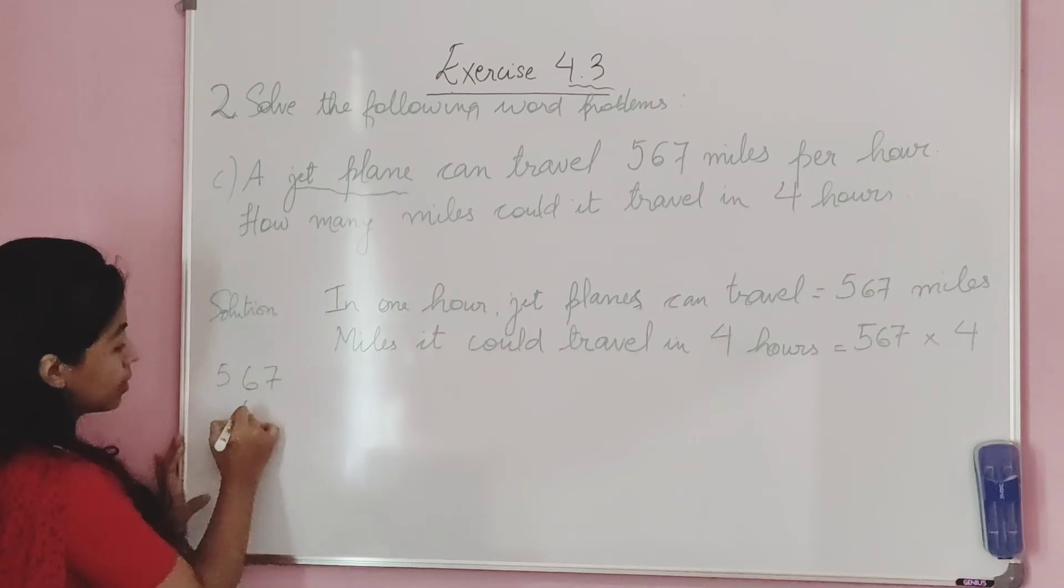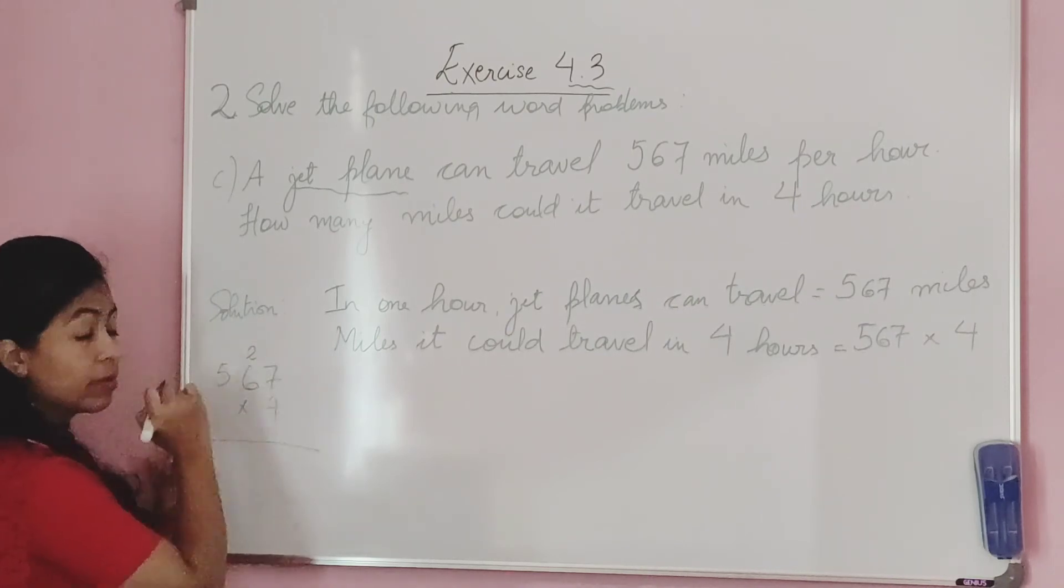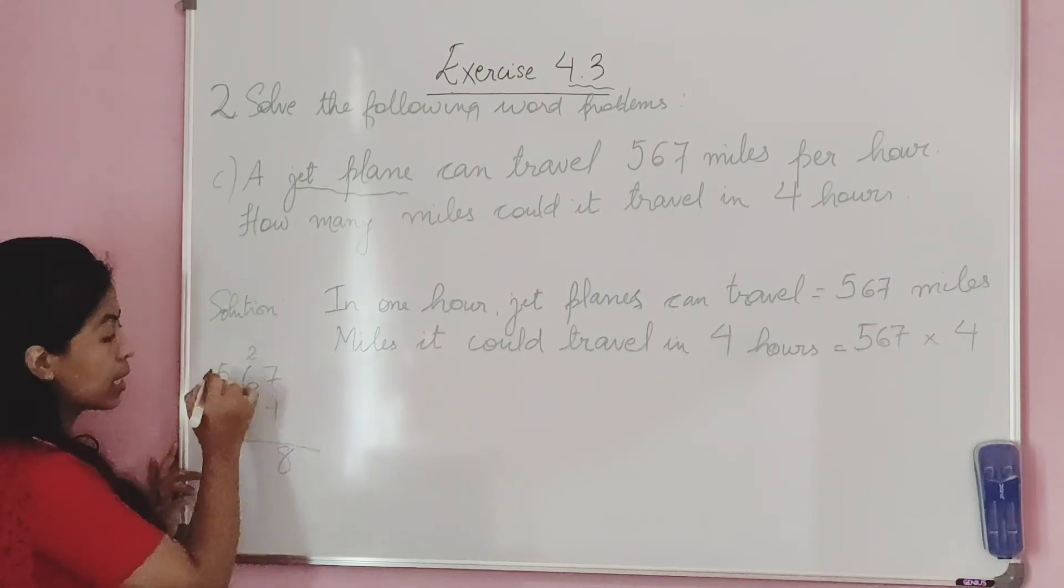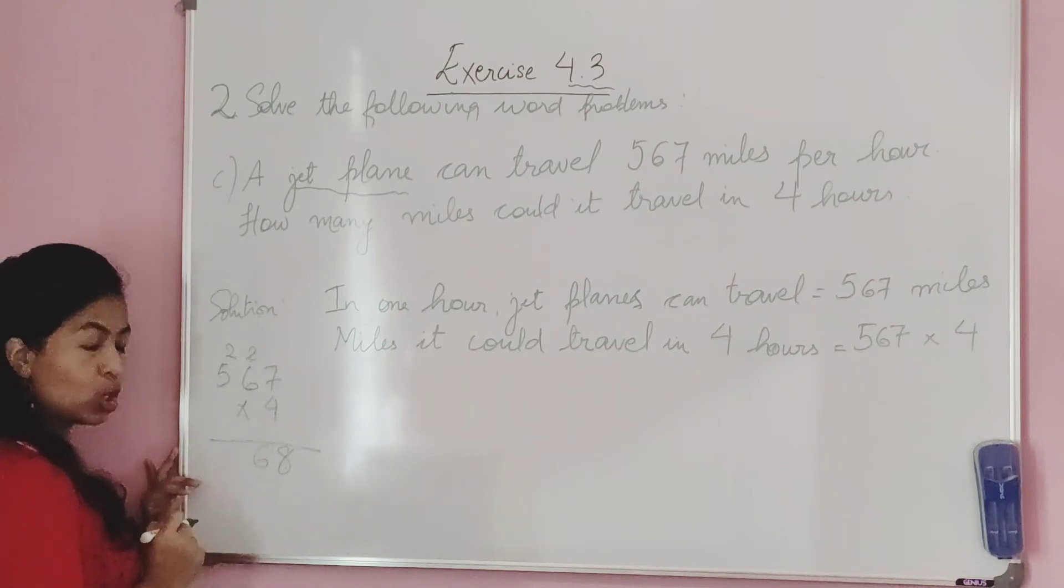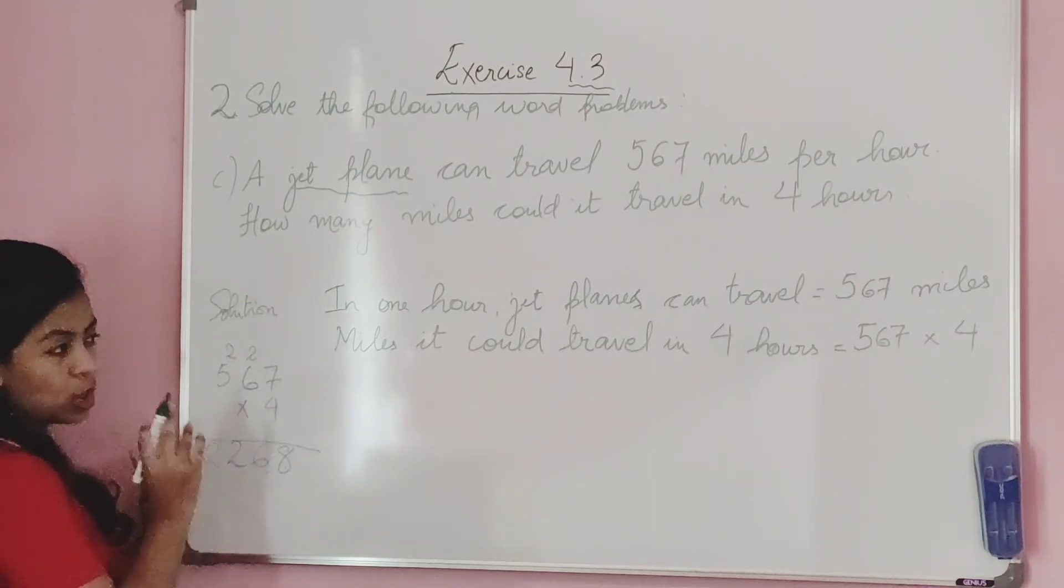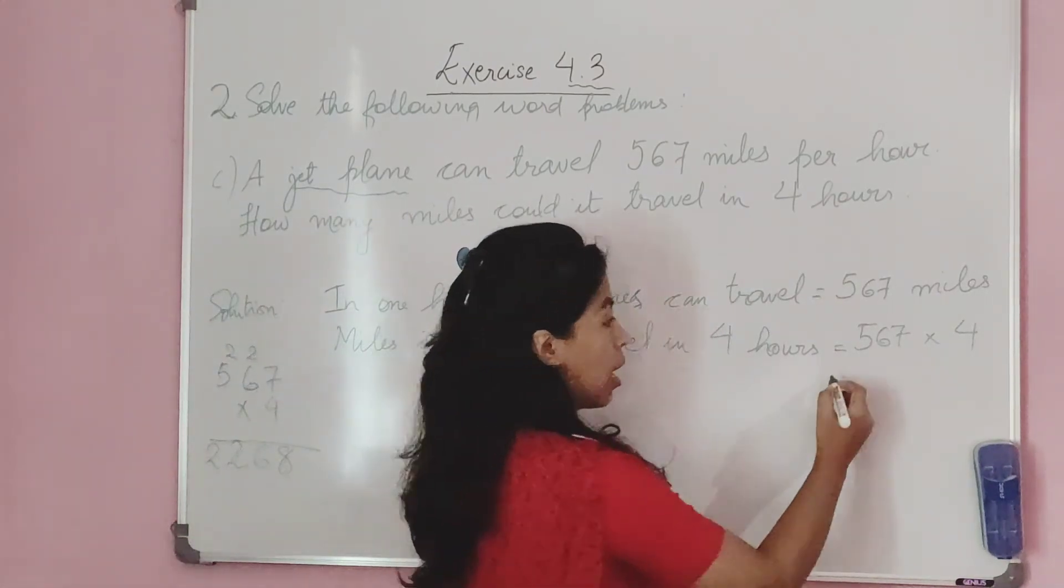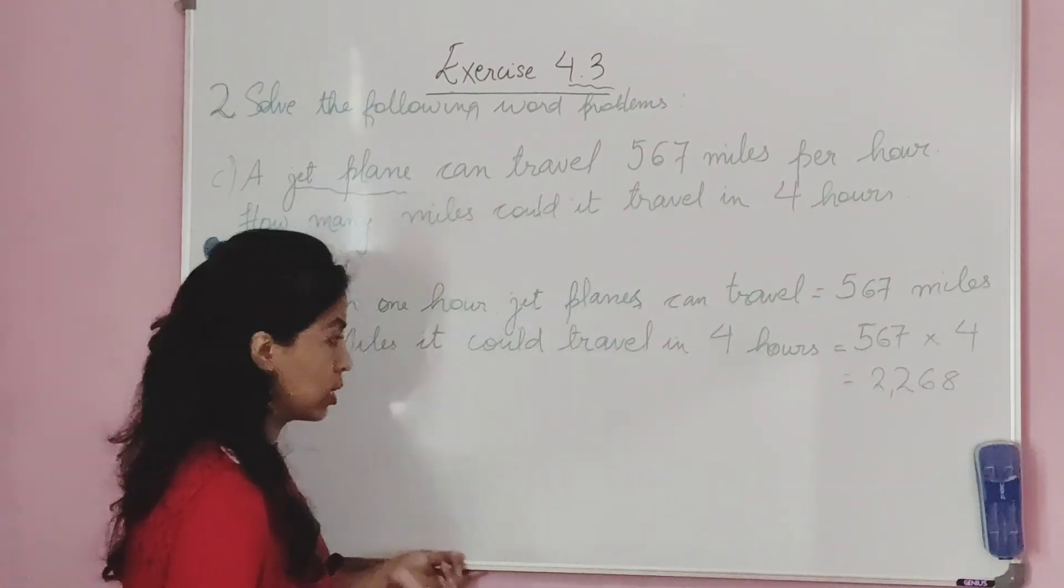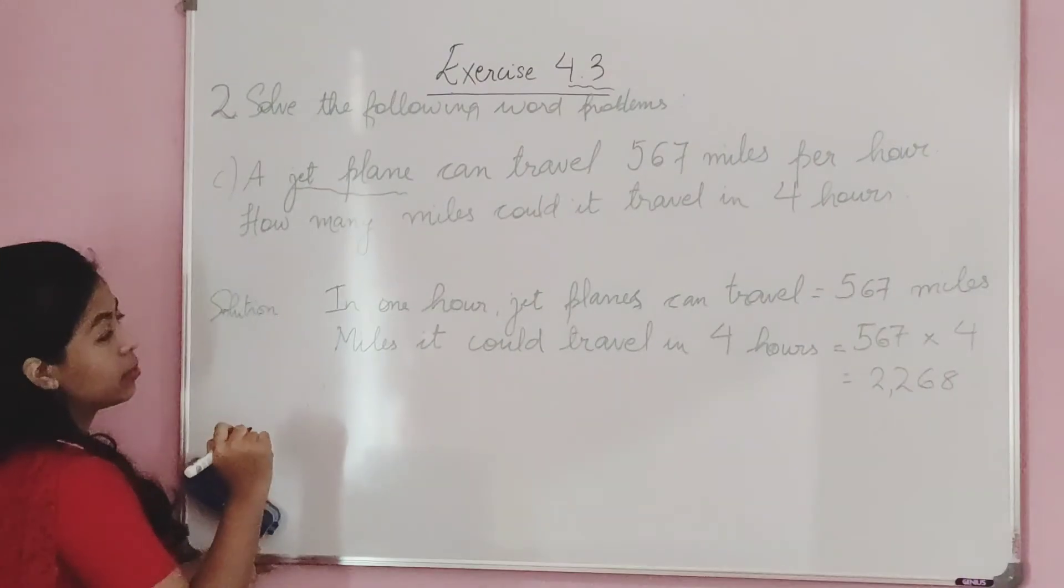567 multiplied by 4. Let's calculate: 4 times 7 is 28, 4 times 6 is 24 plus 2 is 26, 4 times 5 is 20 plus 2 is 22. That gives us 2,268.